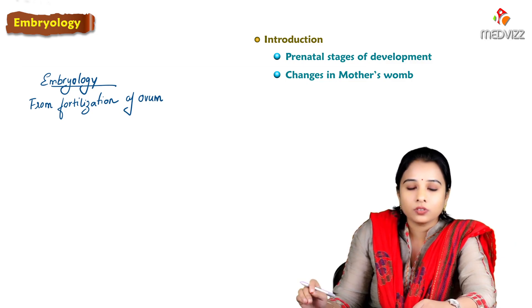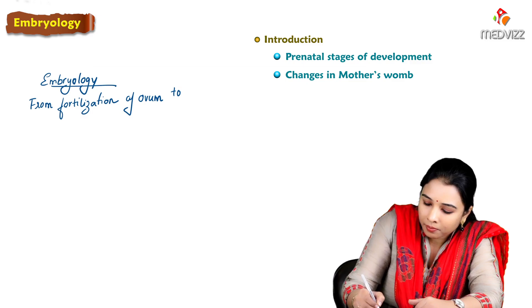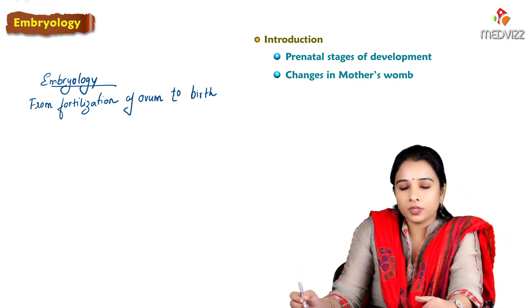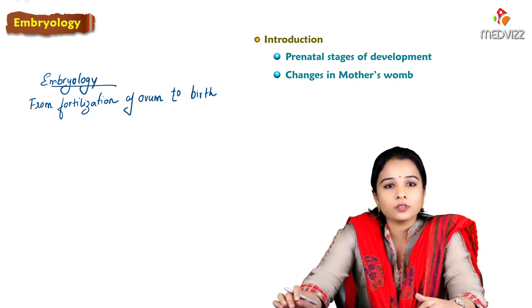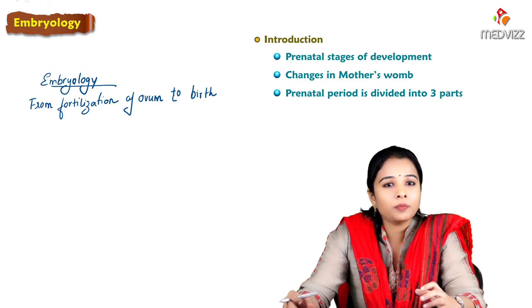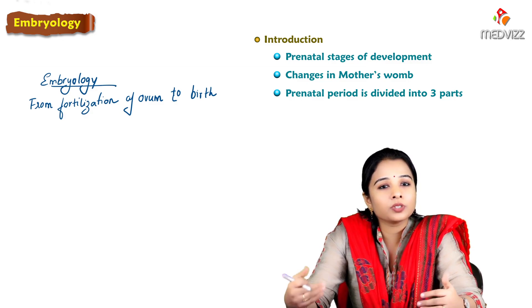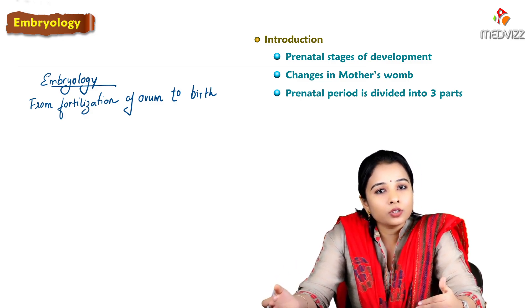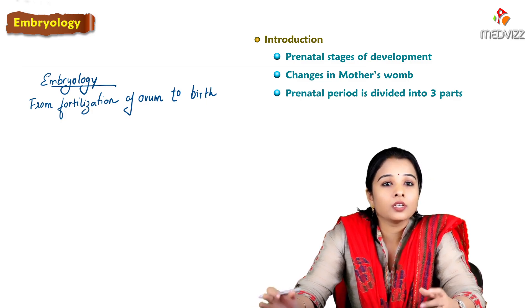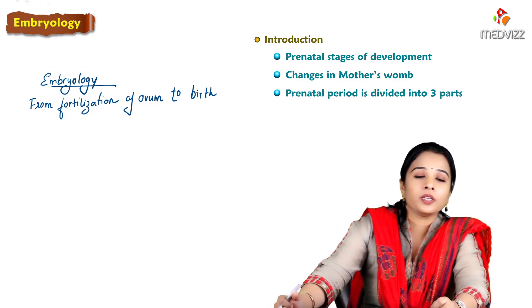After fertilization, a zygote forms. From the development of the zygote to the birth of a newborn — this is embryology. We can divide the prenatal period (that is, the development of the baby inside the mother's womb) into postnatal once the newborn comes out. The prenatal period is further divided into three parts: preembryonic period, embryonic period, and fetal stage.